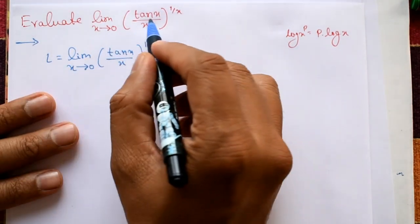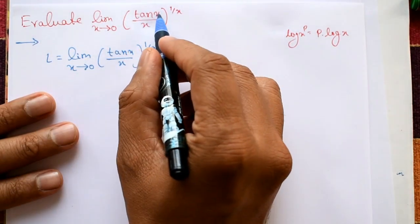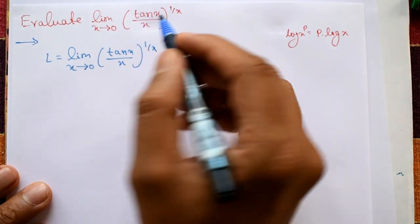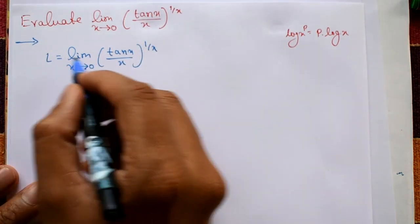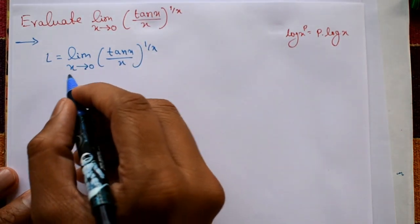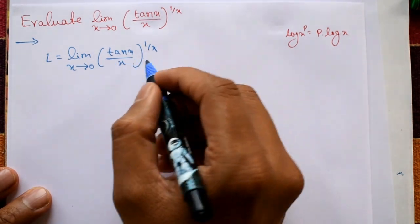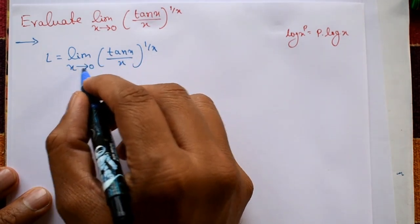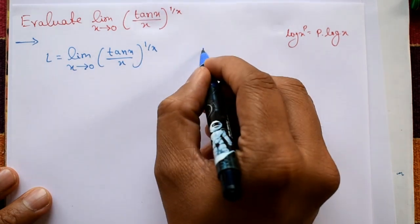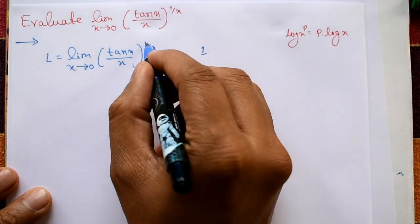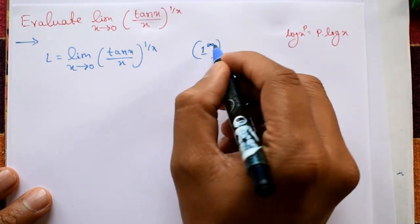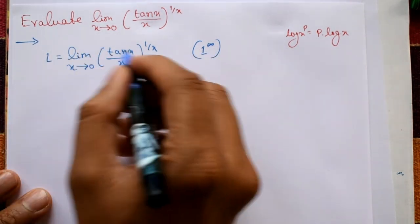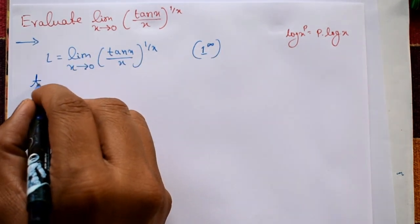Evaluate the limit as x tends to 0 of (tan x / x) raised to 1/x. This is an indeterminate form. Let L equal the right-hand side. Checking the form: as x tends to 0, the base (tan x / x) tends to 1, and the exponent 1/x tends to infinity, so this is a 1^∞ indeterminate form.